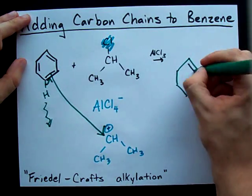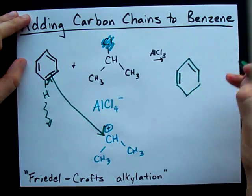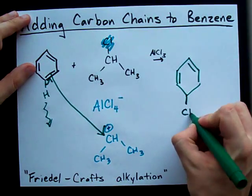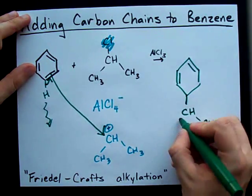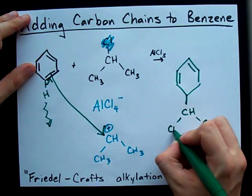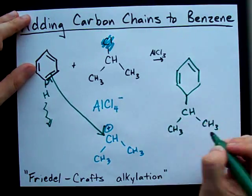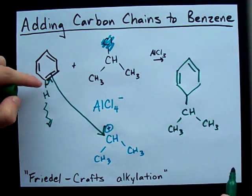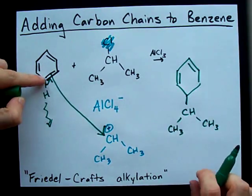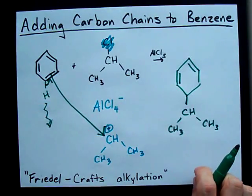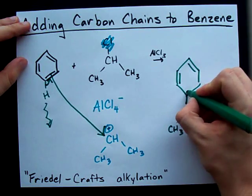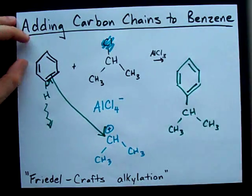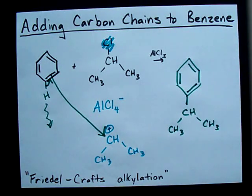Long story short, you end up with the benzene ring, and then you have this bit added — the CH with two CH3s attached to it. And remember, you broke that double bond to make the bond to the CH, but luckily the H was willing to re-donate the electrons, and you reform your benzene ring, and you're good to go.